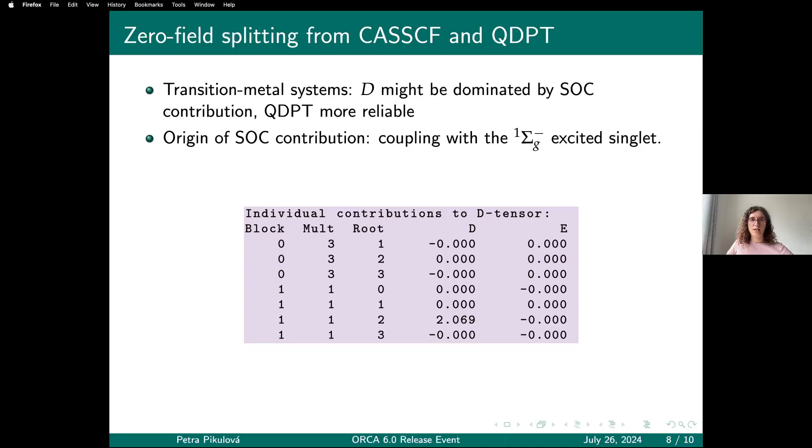What I would like to say is that QDPT calculations can be quite nice if your system has some kind of more complicated electronic structure or if the spin-orbit coupling is large, because then QDPT will be way more reliable than the response theory calculation.